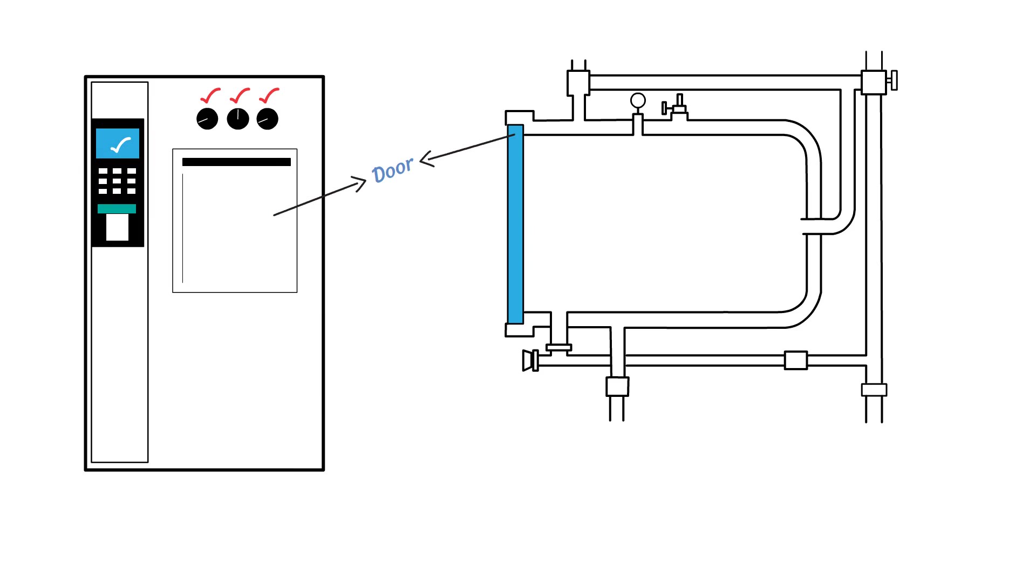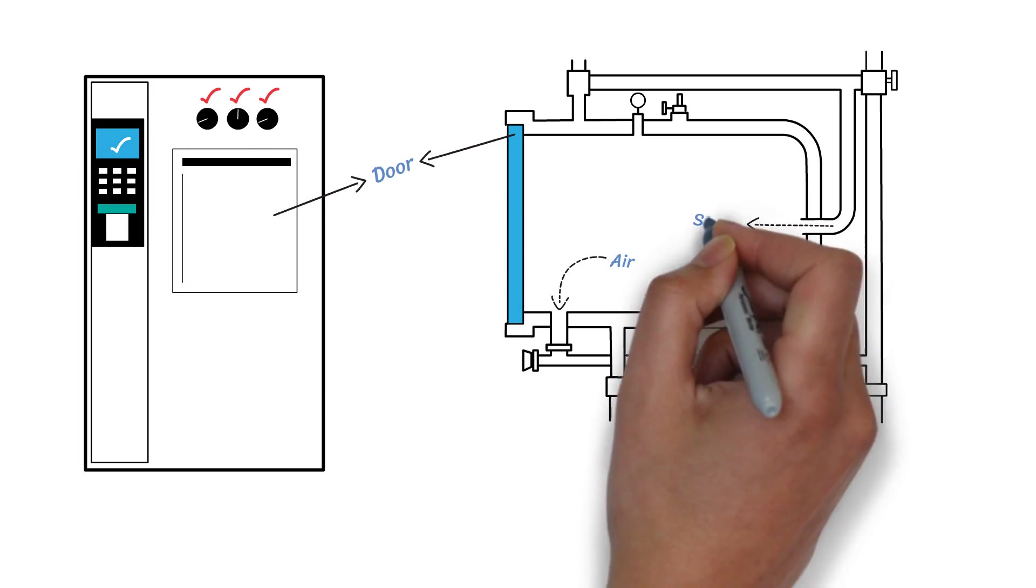Advanced autoclaves have automated controls with a microprocessor or touchscreen interface to set and monitor sterilization cycles. Other key components include a vacuum pump for air removal, a steam generator or direct steam source,